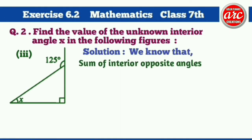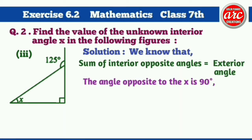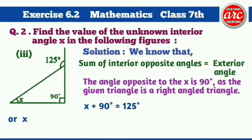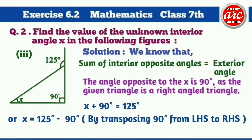Part 3 solution: We know that the sum of interior opposite angles is equal to the exterior angle. The angle opposite to X is 90 degrees, as the given triangle is a right-angle triangle. So X plus 90 degrees is equal to 125 degrees, or X is equal to 125 degrees minus 90 degrees, so X is equal to 35 degrees.